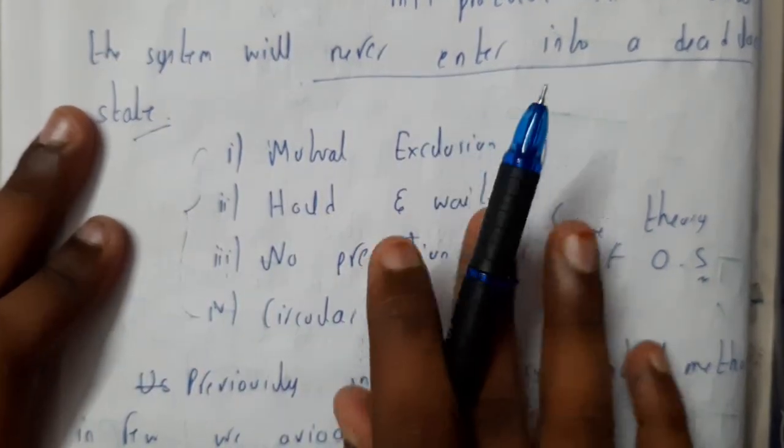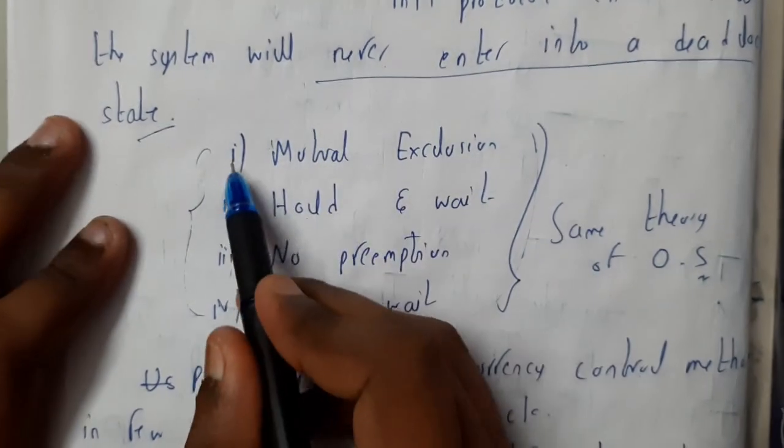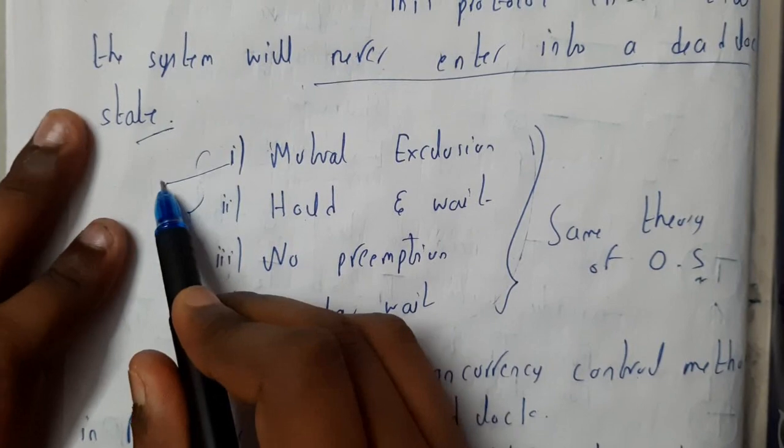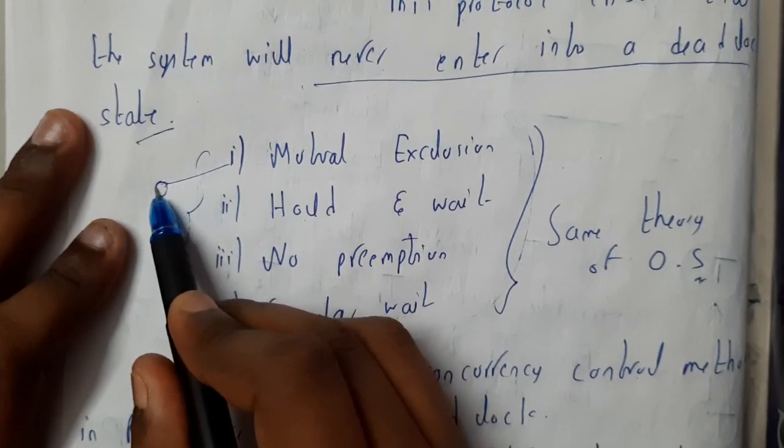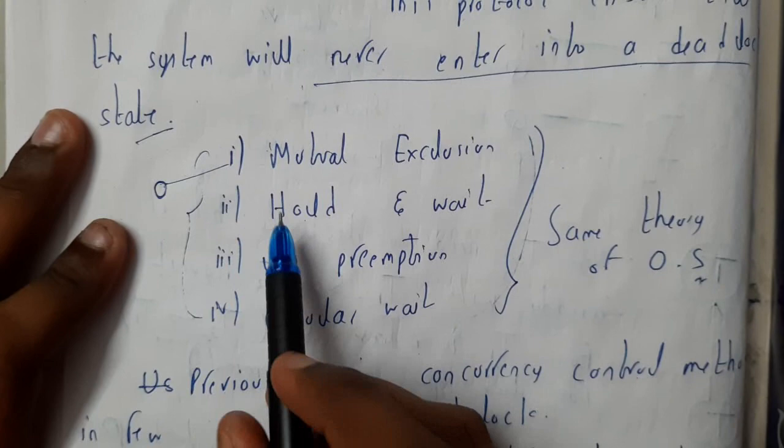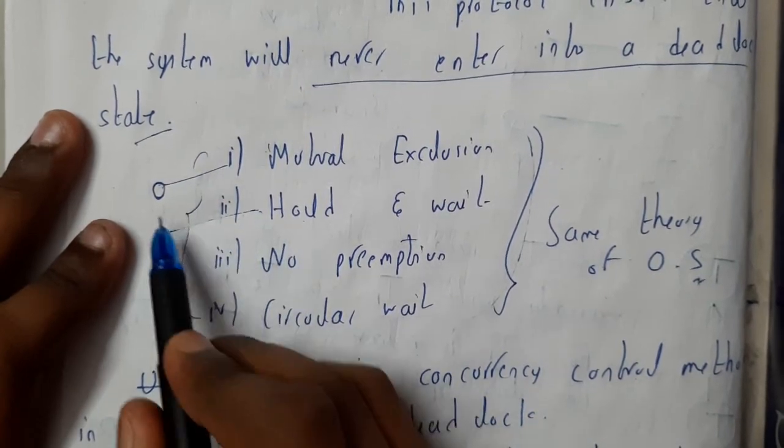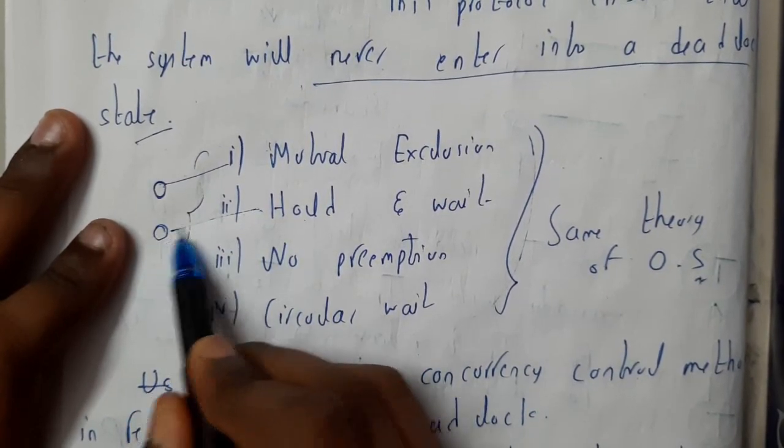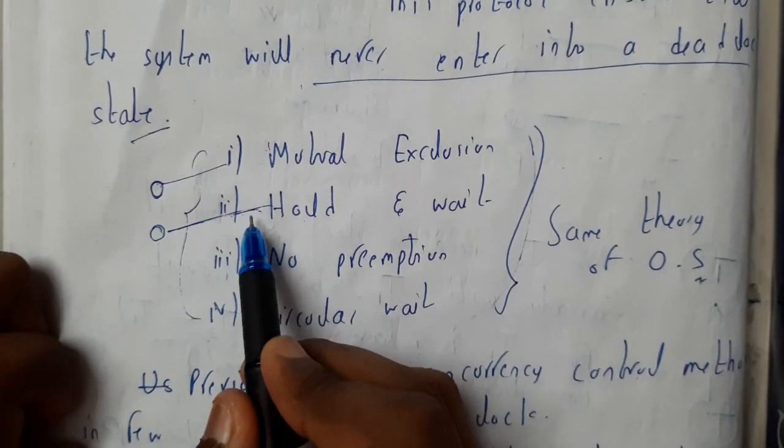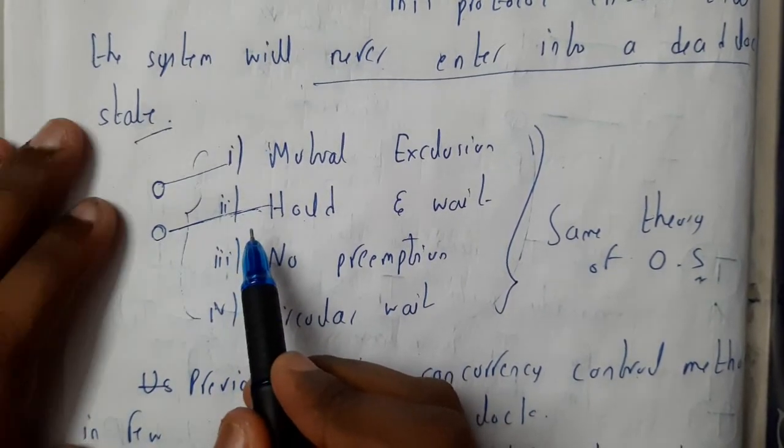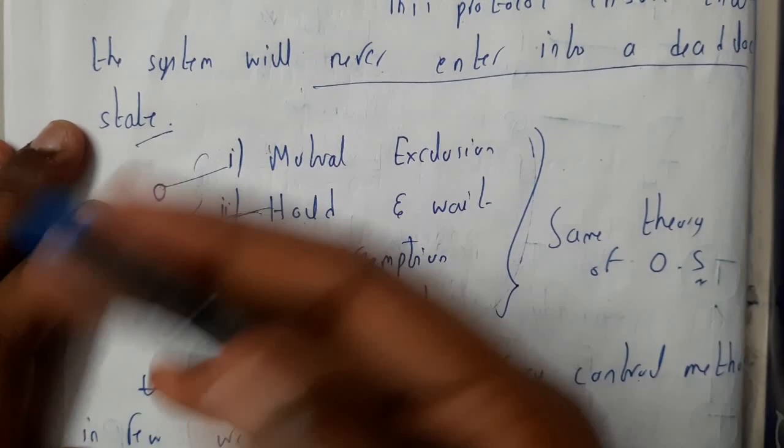The first is mutual exclusion, which means only one process should execute or use a particular resource. Second is hold and wait. If a process is holding a particular resource and requesting another resource, it should release the first resource and only request when both resources are available.